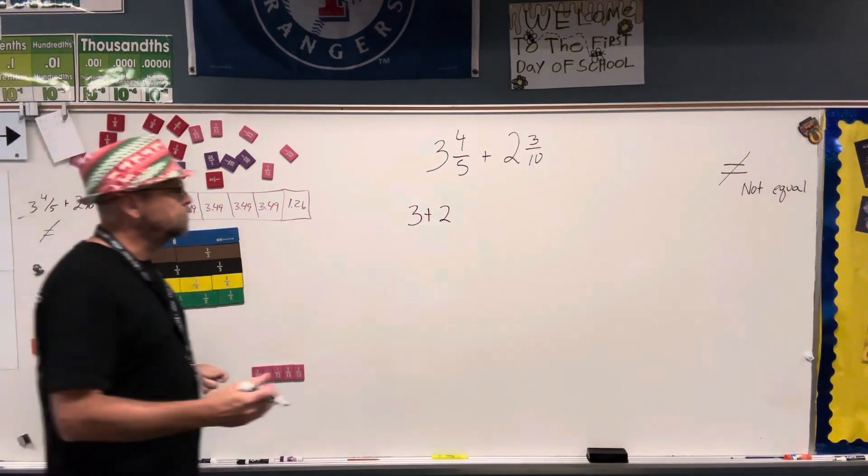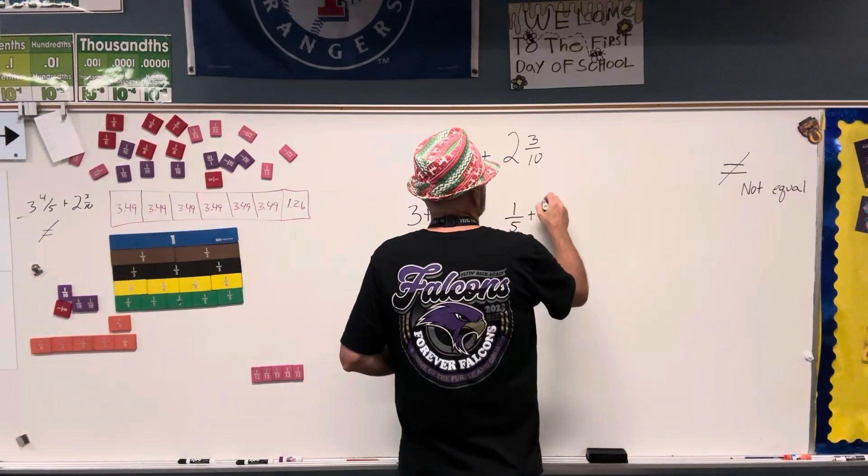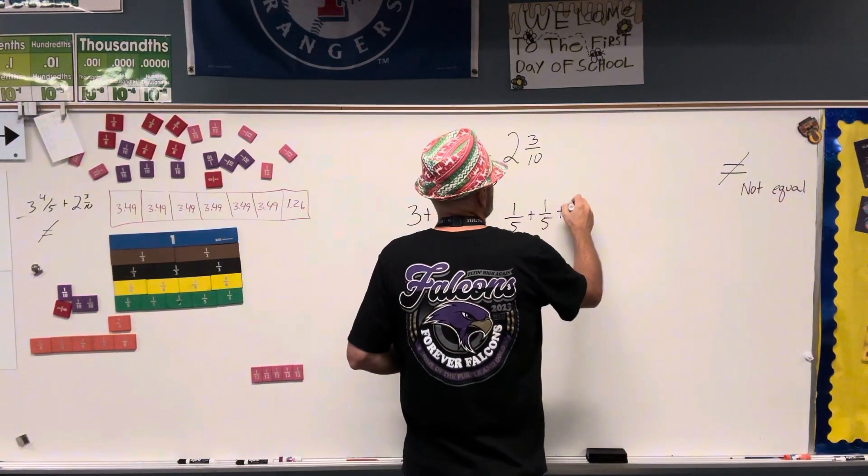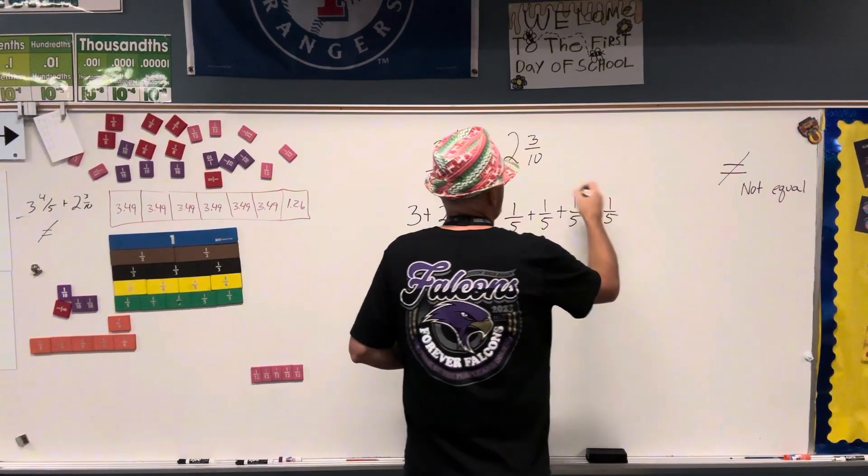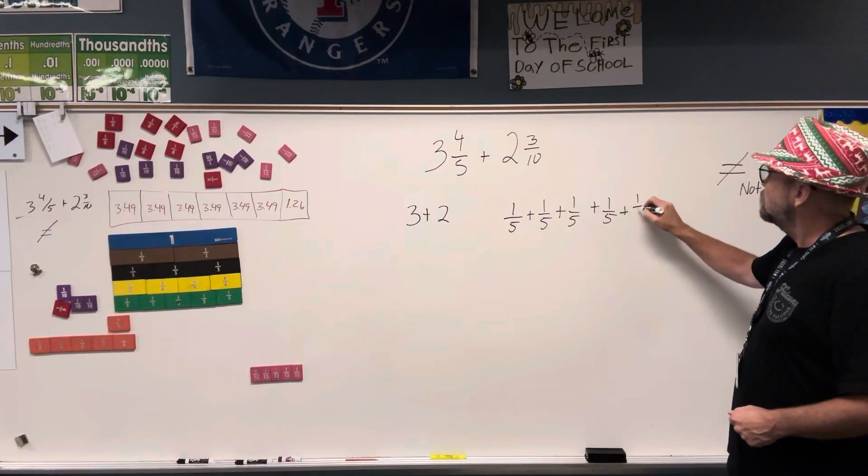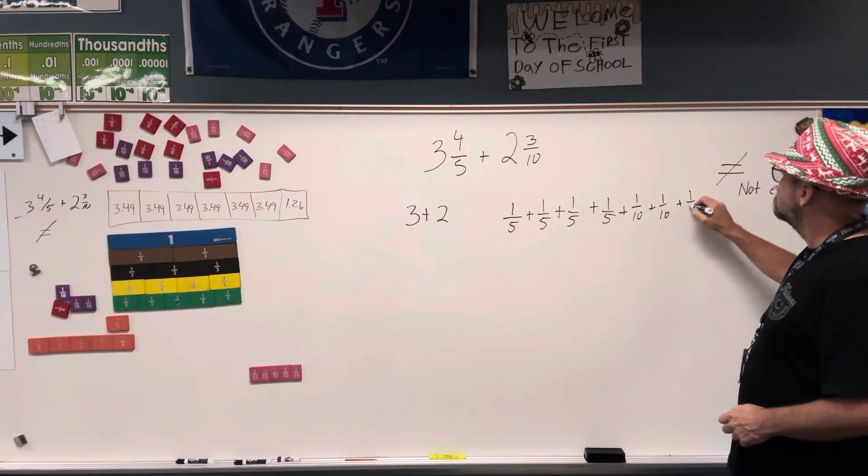Now I have 4 fifths, which is 1 fifth plus 1 fifth plus 1 fifth plus 1 fifth. I have 3 tenths, plus 1 tenth plus 1 tenth plus 1 tenth.